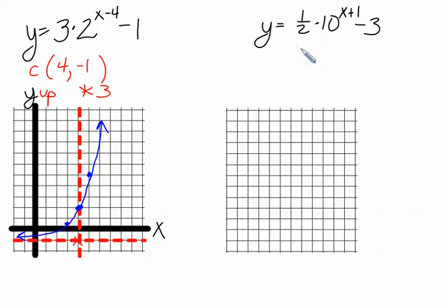Now we shift our attention to the second graph, and we should be able to speed things up a little bit. The center point will be at negative 1, negative 3. This graph will also open up, and we're multiplying the y-coordinates by 1 half in this case.